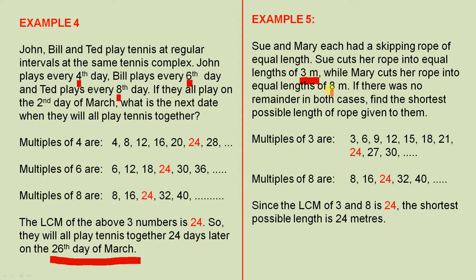The multiples of 3 are these. The multiples of 8 are these. Since the lowest common multiple of 3 and 8 is 24, the shortest possible length is 24 metres.